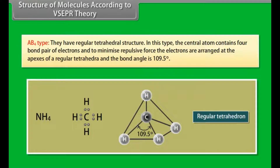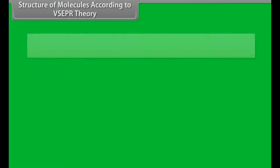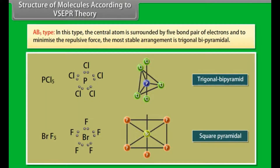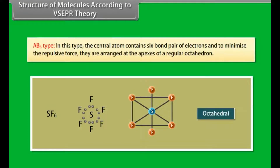In AB4 regular tetrahedral structure, the central atom contains four bond pair electrons; to minimize repulsive force, the electrons are arranged at the apexes of a regular tetrahedron with a bond angle of 109.5 degrees. In AB5 type, the central atom is surrounded by five bond pair electrons and the most stable arrangement is trigonal bipyramidal. In AB6 type, the central atom contains six bond pair electrons arranged at the apexes of a regular octahedron.